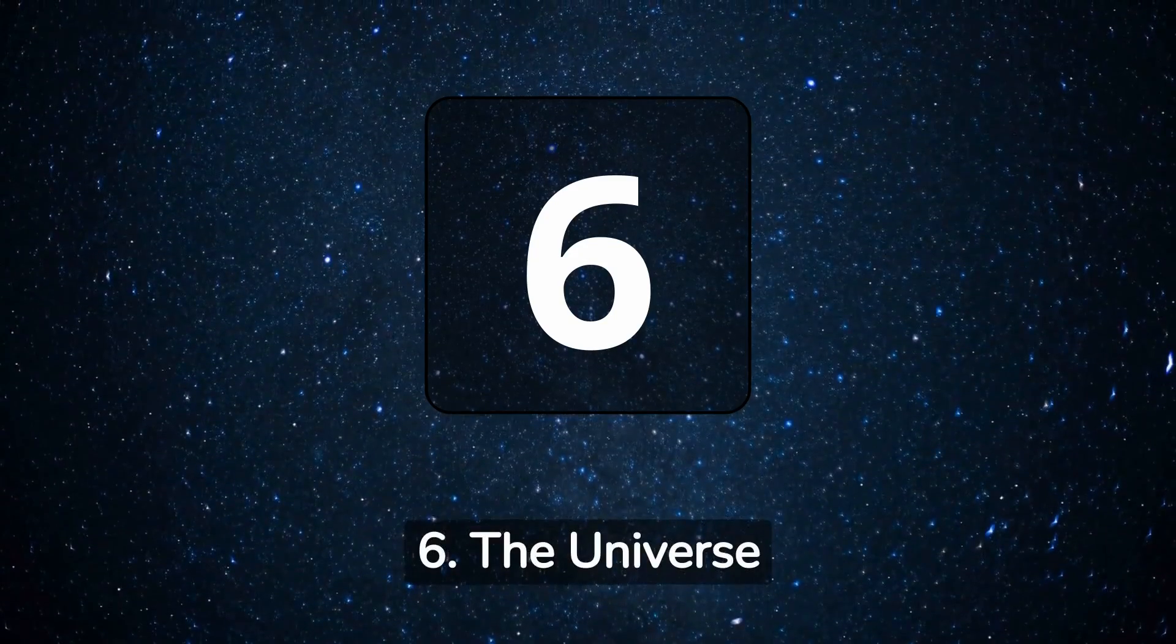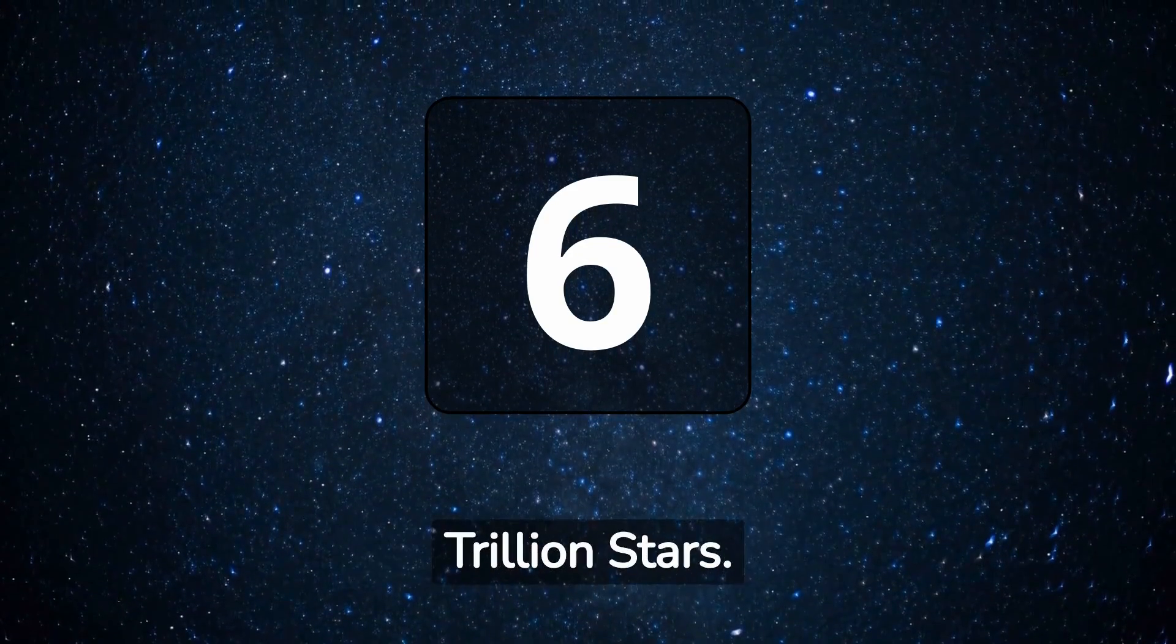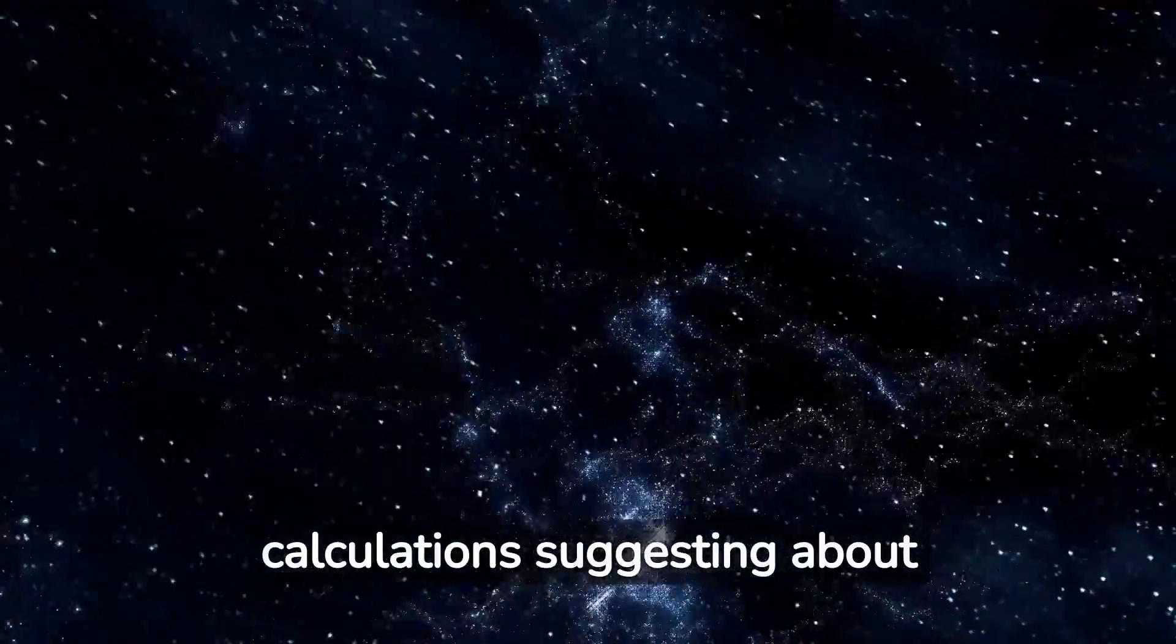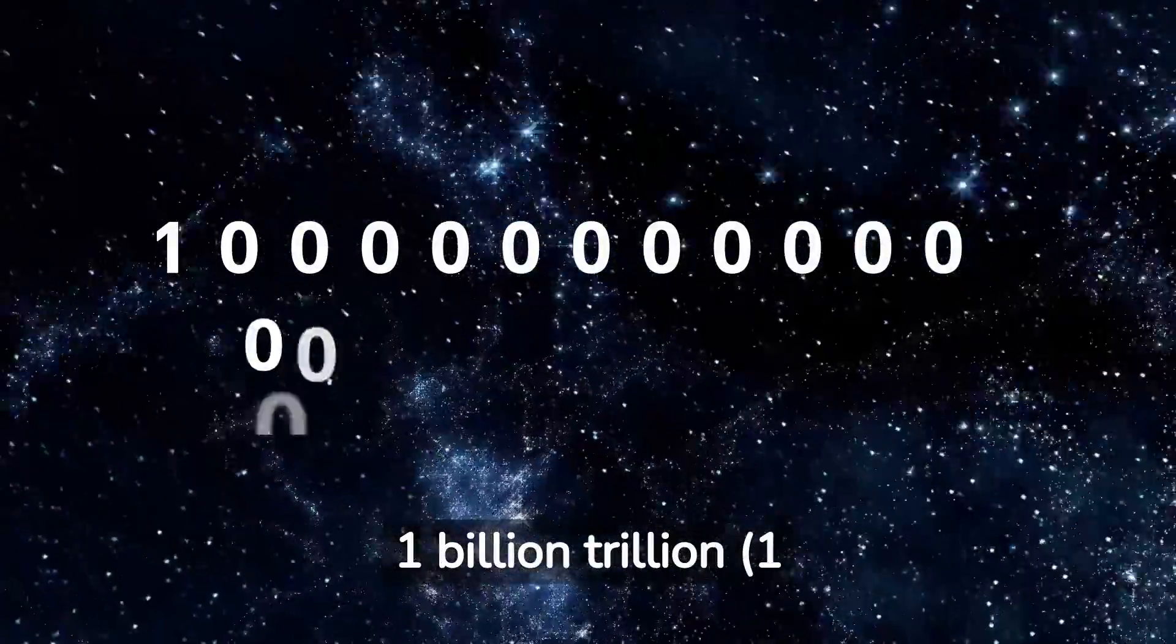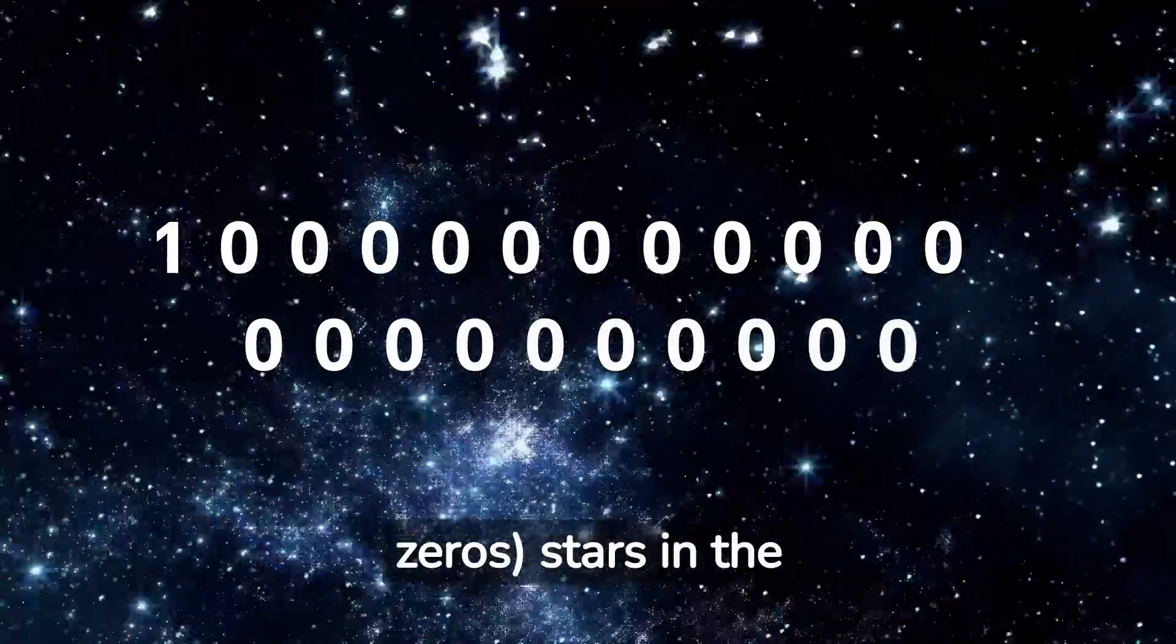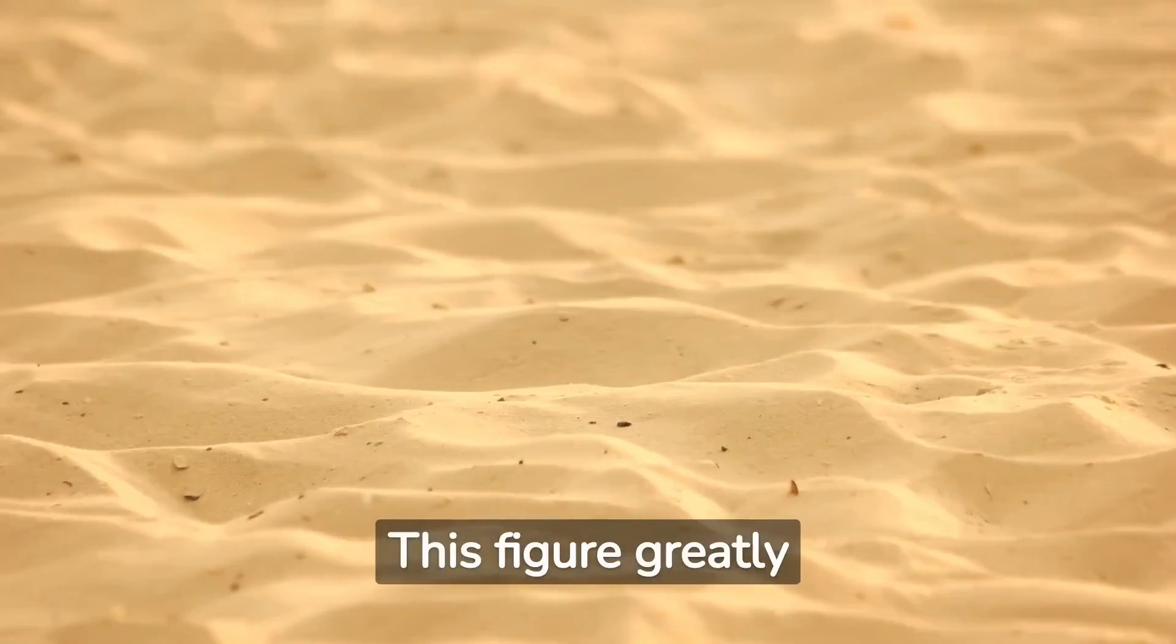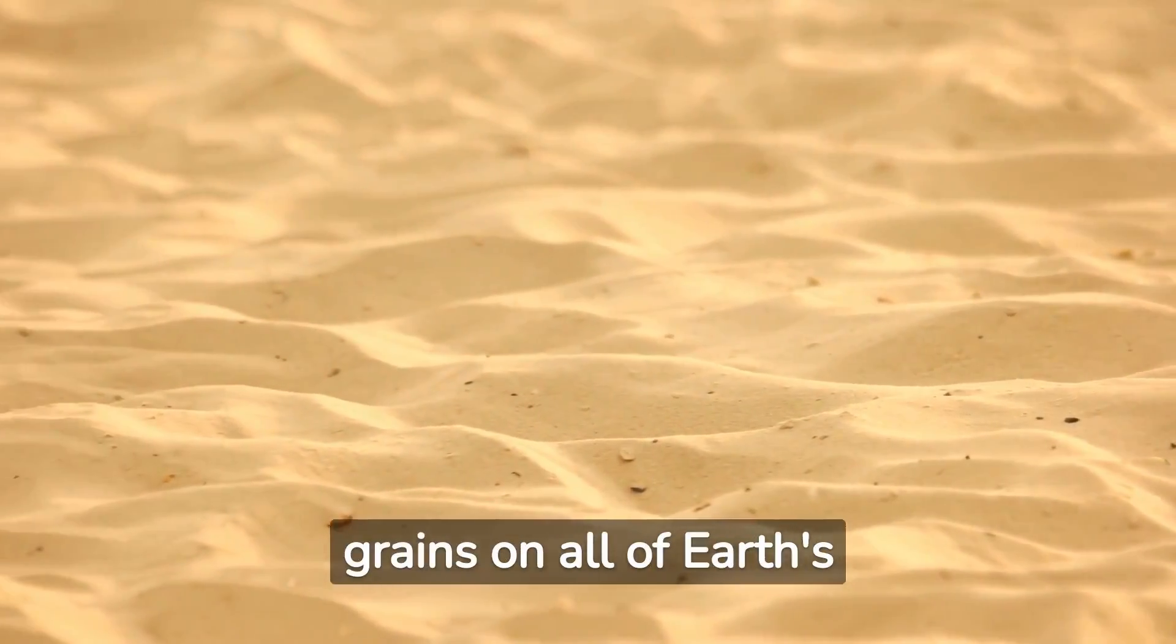Number 6: The Universe Houses Over a Billion Trillion Stars. The universe brims with stars, with current calculations suggesting about one billion trillion, one followed by 21 zeros, stars in the observable universe. This figure greatly surpasses the total number of sand grains on all of Earth's beaches.